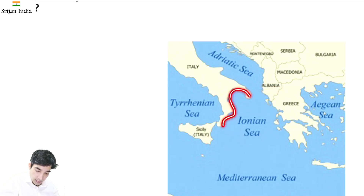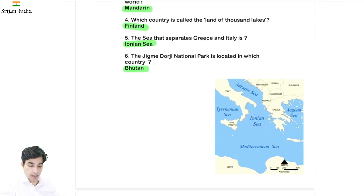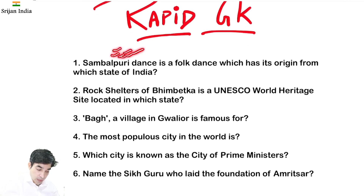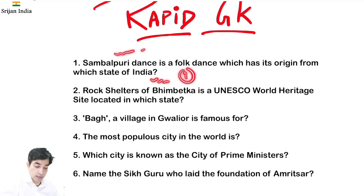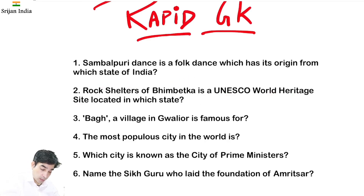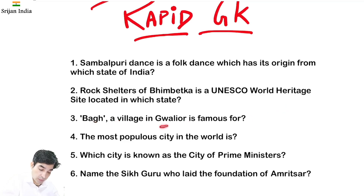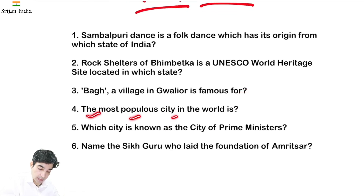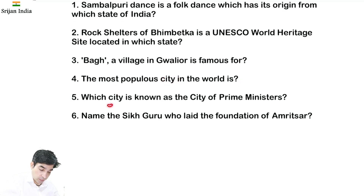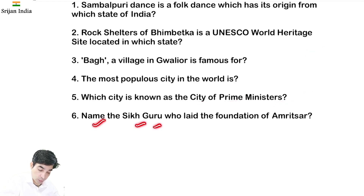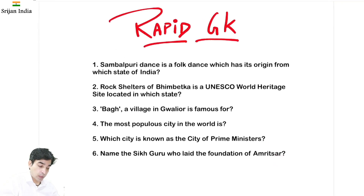Ionian Sea is located between southern Italy and western Greece. Today's question is about Sambalpuri dance — from which state of India does it belong? Rock Shelters of Bhimbetka is a UNESCO World Heritage Site — which state is it located in? Baag is a village in Gwalior with historic importance. The most populous city in the world question, and which city is known as the city of Prime Ministers. The Sikh Guru who laid the foundation of Amritsar — these are today's six questions.